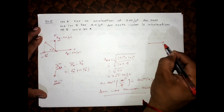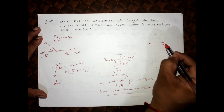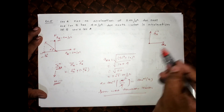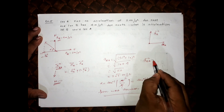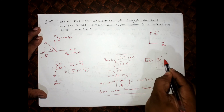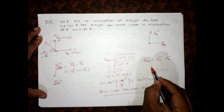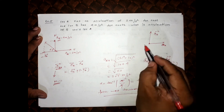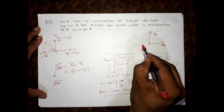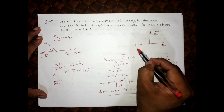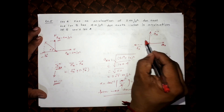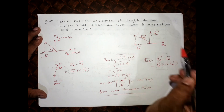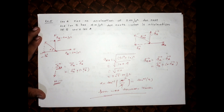Car A was going east and car B was going north. For acceleration of B with respect to A, we take acceleration of B and add minus the acceleration of A. So this minus acceleration of A combined with acceleration of B gives the resultant — that is the answer.